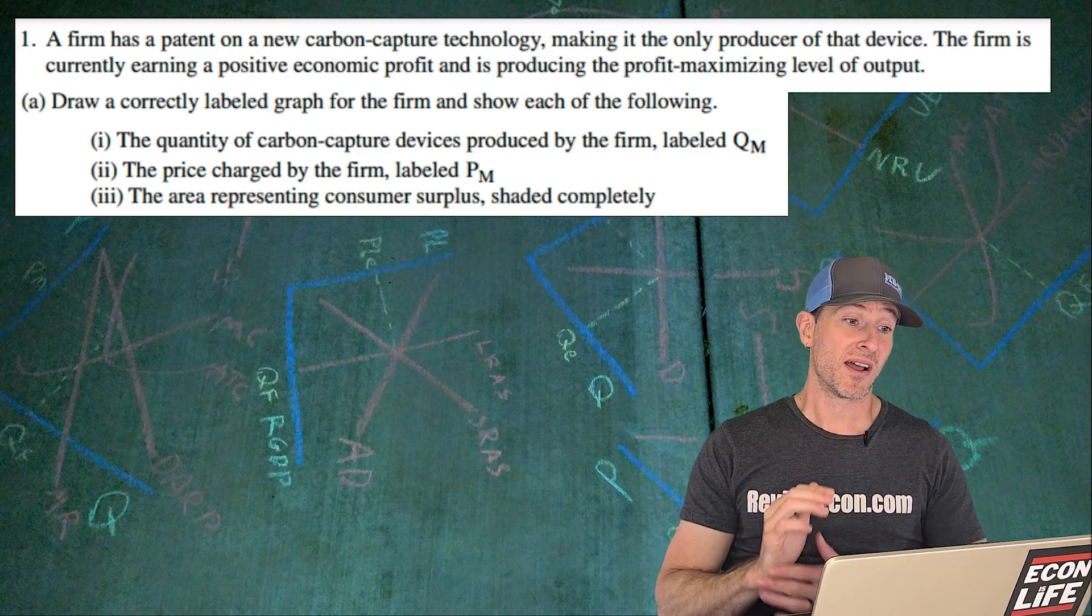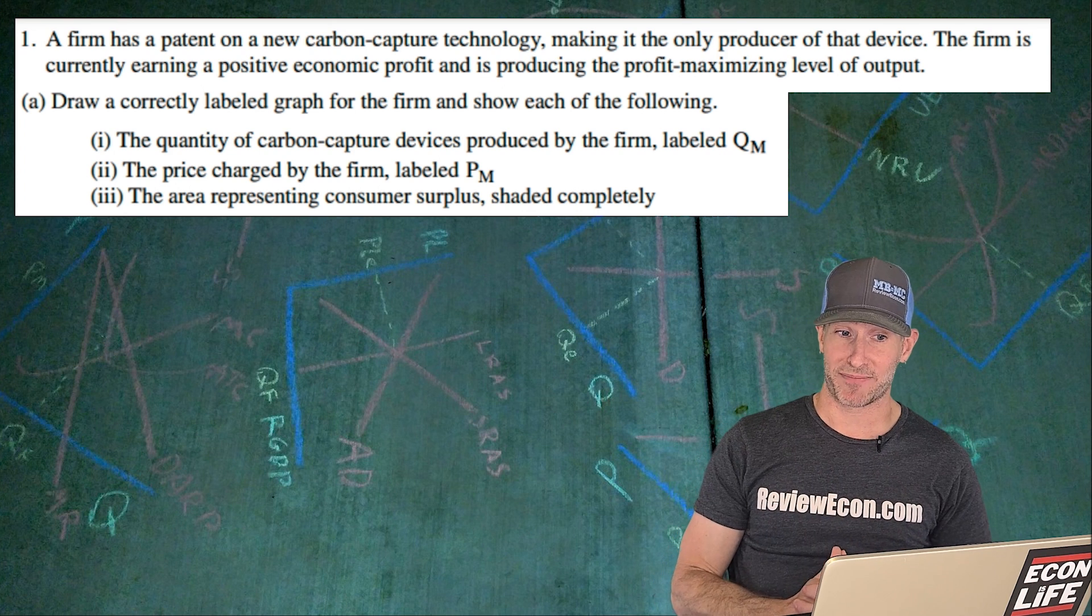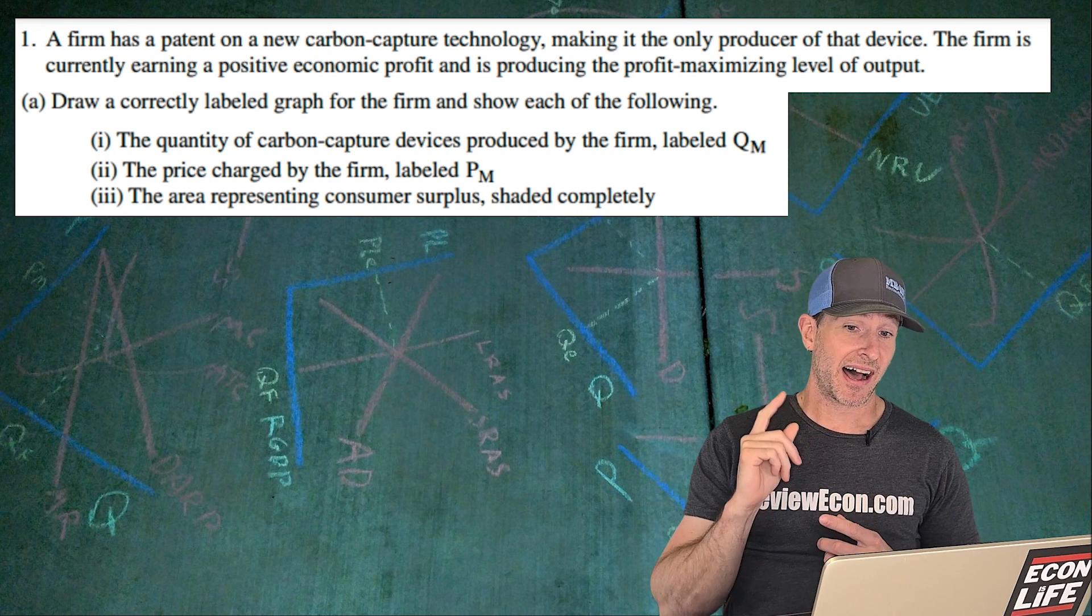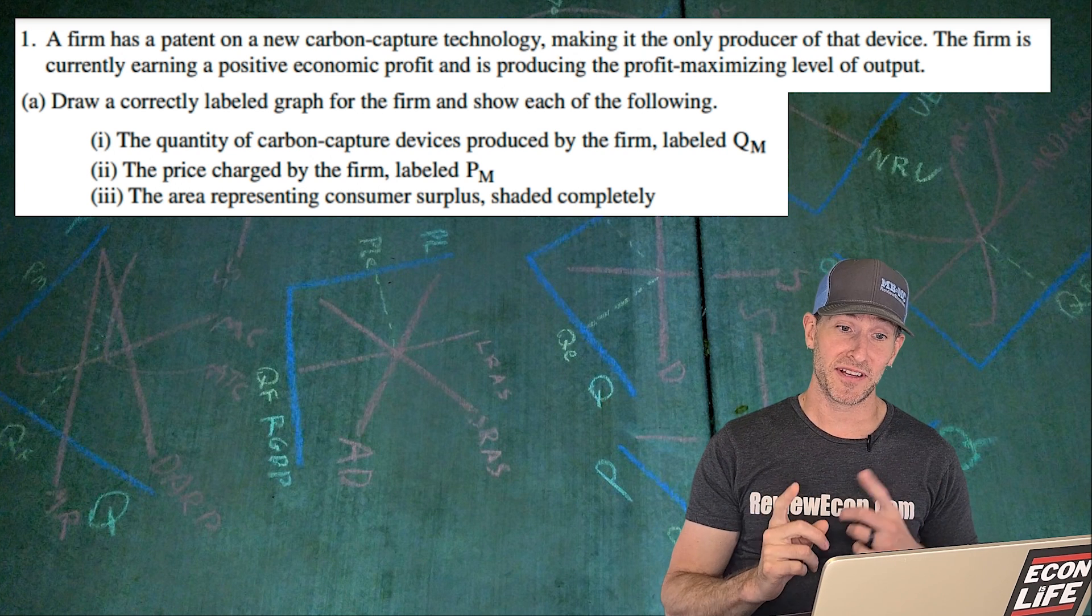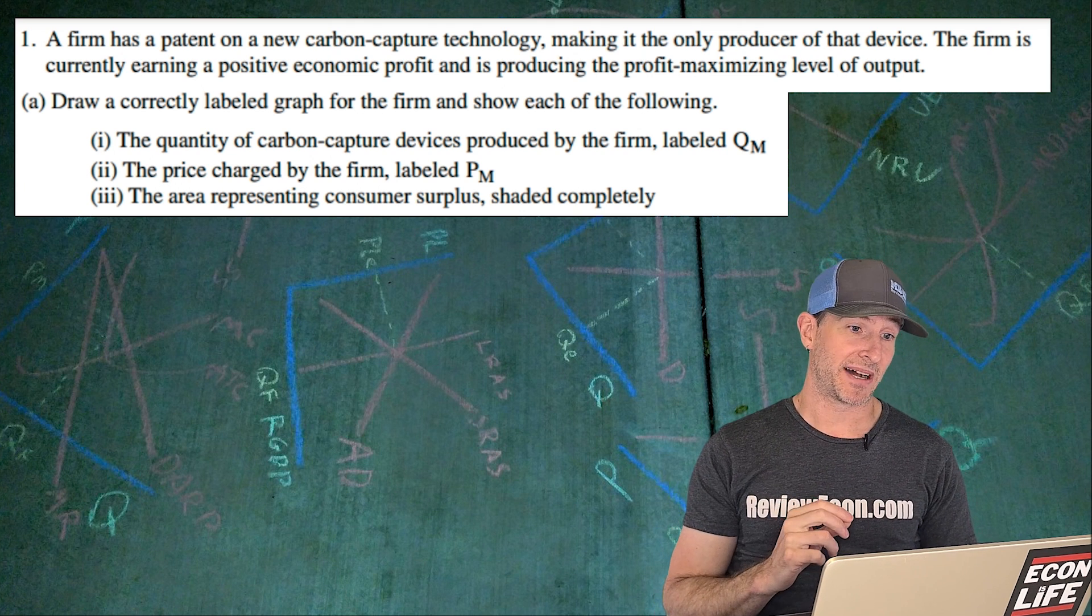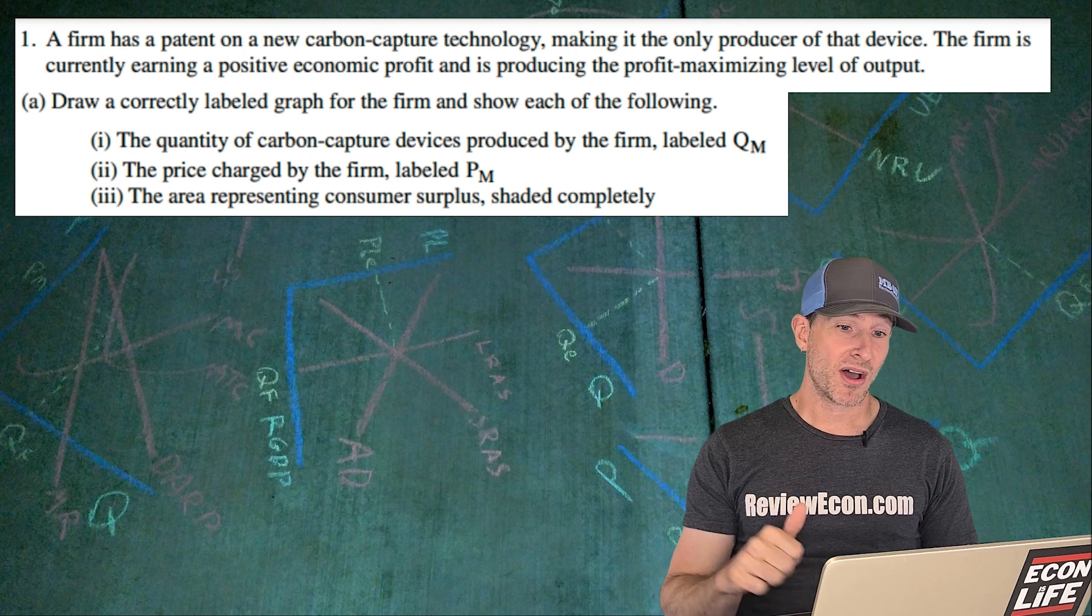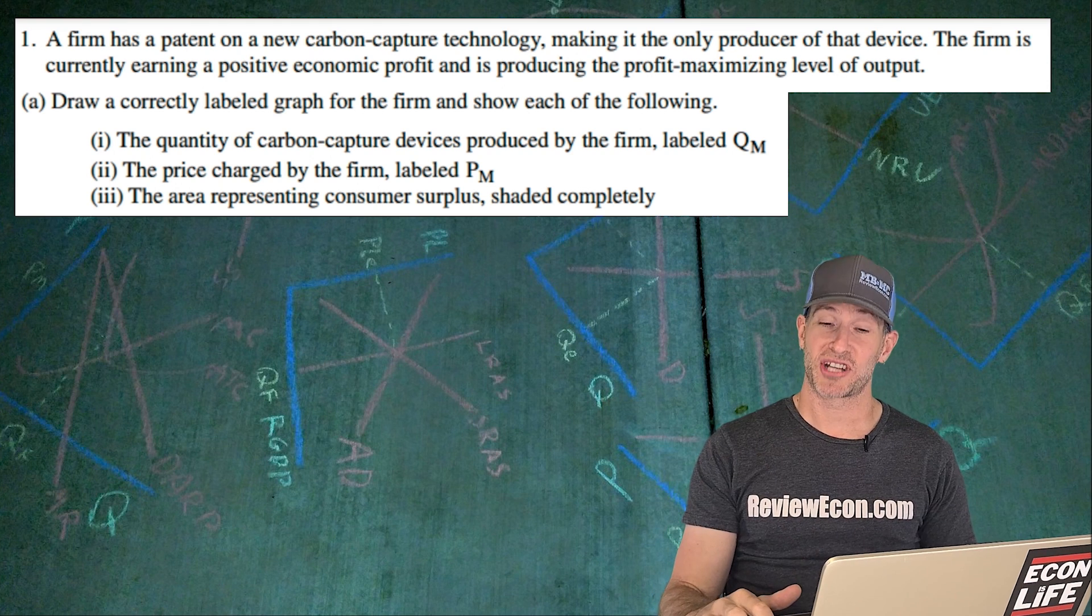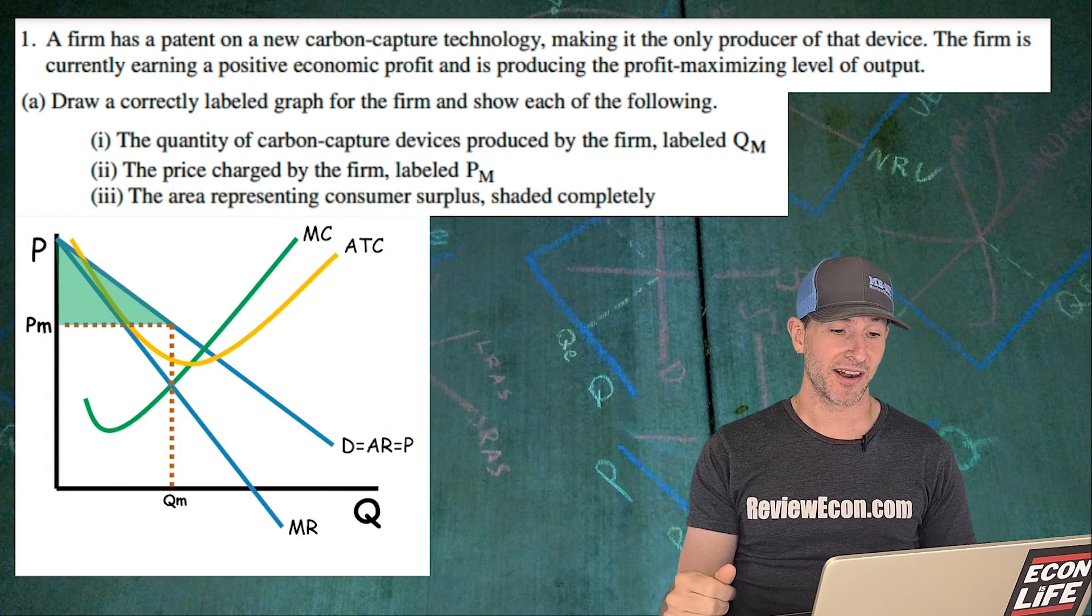First of all, our first question. We have a company that has a patent on a new carbon capture technology and they're the only producer that can make it. That means they've got a monopoly, essentially. Their firm is earning positive economic profit and they're producing the profit-maximizing level of output. We're going to draw that monopoly graph, label the quantity the firm's producing, the price charged, and shade the area of consumer surplus.